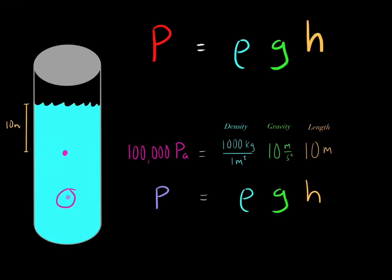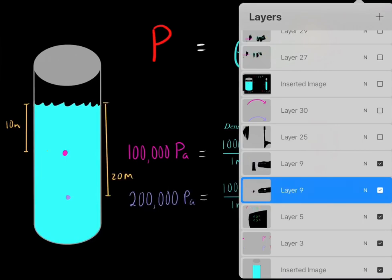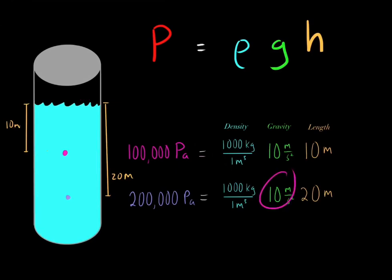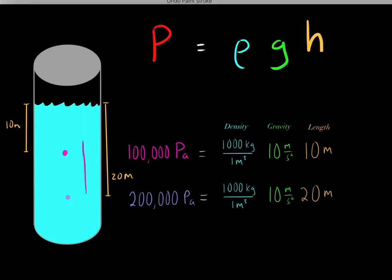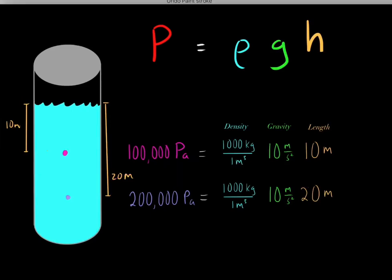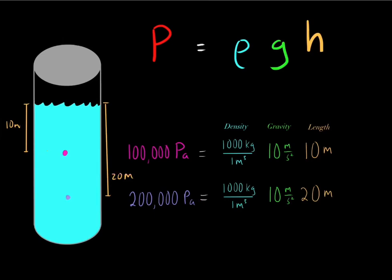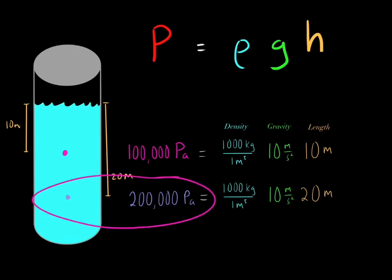What's the pressure at this other given point? We use the same equation. We find the density of water, multiply it by the acceleration due to gravity, and multiply it by 20 meters, because this point is 20 meters from the surface of this liquid. If we plug in all those values, we get a pressure of 200,000 pascals.